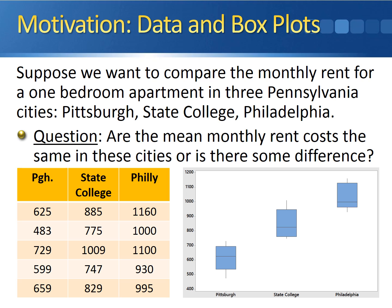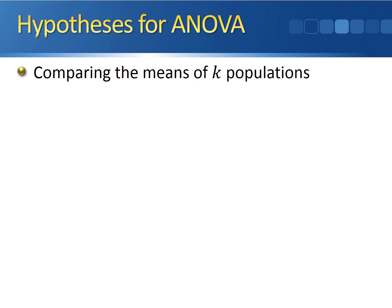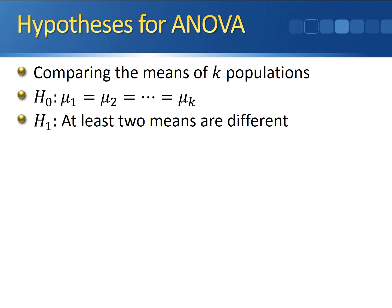While this is a nice descriptive measure, we need a way of formally testing this. Suppose we're comparing the means of K populations. Then the null hypothesis for the ANOVA is that all of the means are equal to one another — mu1 equals mu2, which equals mu3, all the way through muK. The alternative hypothesis says that at least two means are different.